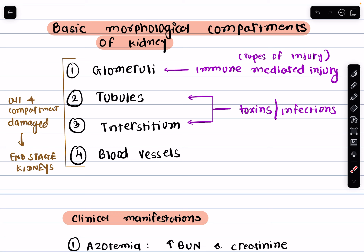Then there is the interstitium — the space between tubules — which can also be impacted by toxins and infections. Lastly, the blood vessels form the fourth compartment; damage here can lead to various pathologies and affect overall kidney function. When all four of these compartments are damaged, it can lead to end-stage renal disease, a serious condition that requires medical intervention.